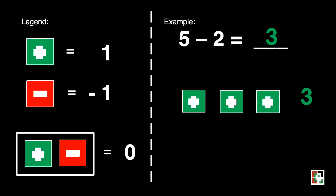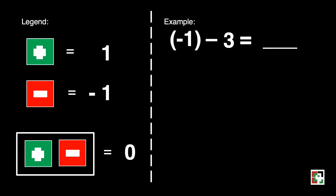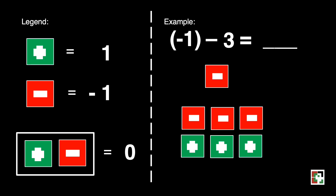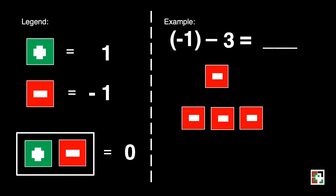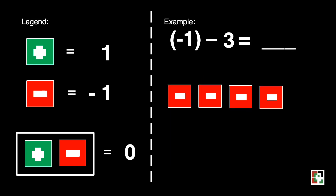Let's have another one. What if we have negative 1 minus 3 is equal to blank? Take note that the subtrahend here is a positive 3. Negative 1 is represented by 1 red square. We can introduce a zero pair in this case — we'll have 3 sets of zero pairs: 1, 2, and 3. Since 3 here is a positive 3, we will remove 3 green squares. What is left is 4 red squares. Our answer is negative 4.